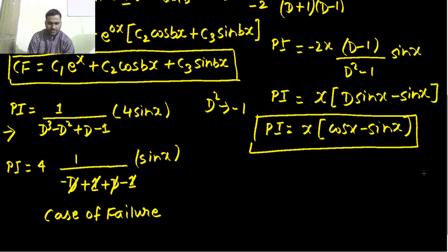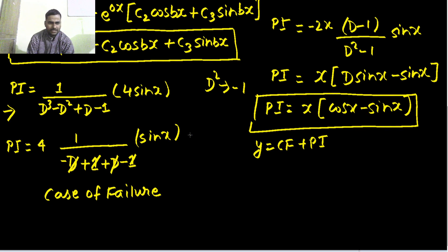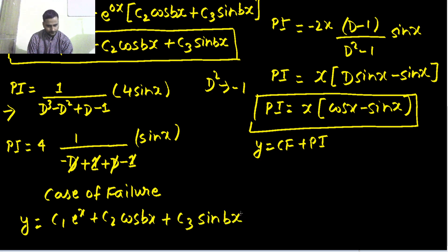And finally as you all know that your y = CF + PI. CF is also there, PI is also in front of us so now you can write your y = CF, order was 3 and as you can see 3 constants are there, plus your PI which is x cos x - sin x. There you get your answer.